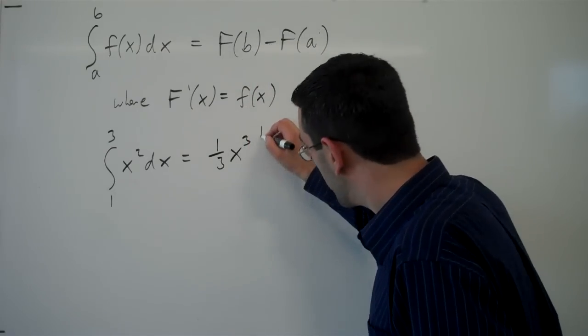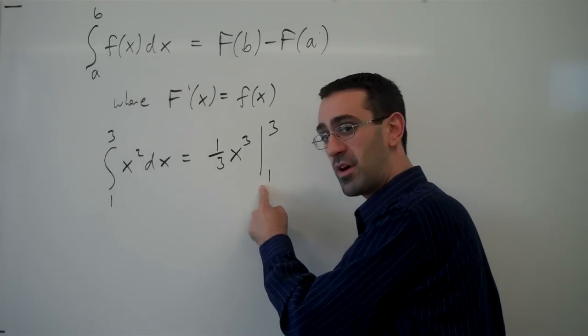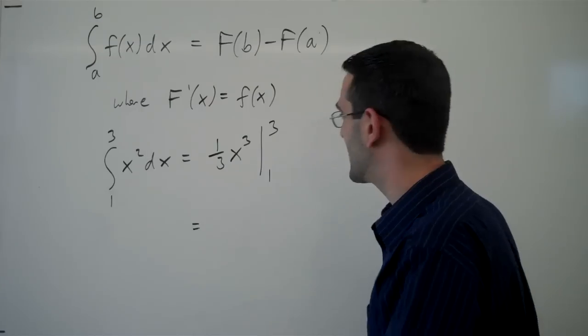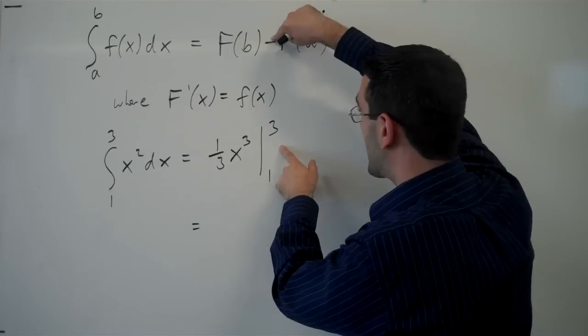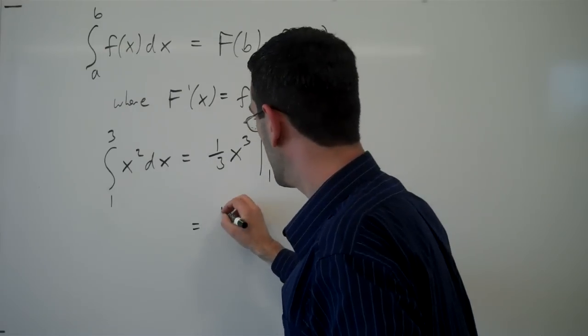And then I can evaluate it from 1 to 3. So this vertical bar here is evaluation, is a symbolism for evaluation. It says I'm going to take this function, evaluate it at 3, and then subtract from that this function evaluated at 1. So I'm going to plug in 3.